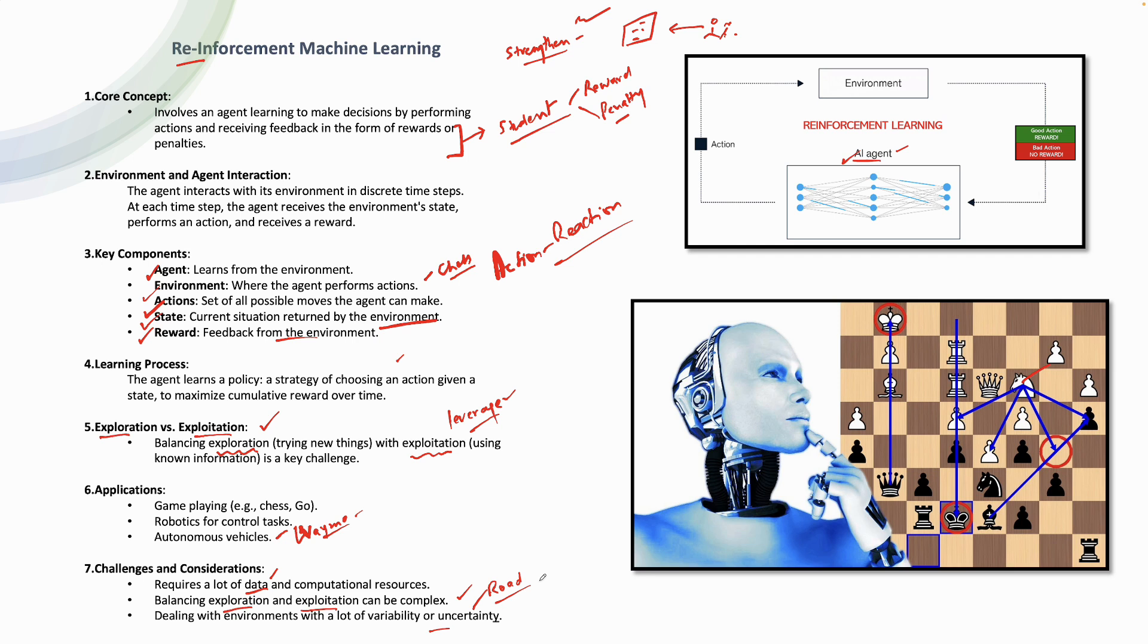That is reinforcement. You are strengthening your model. And it's all based on the feedback, reward or penalty. With this, we come to the end of the lecture. Reinforcement machine learning. Thanks for watching.